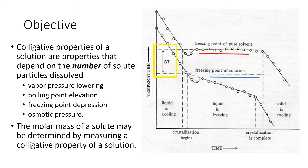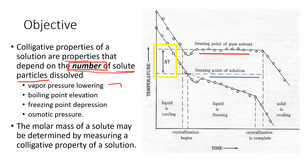In this lab we are applying our knowledge of colligative properties. Colligative properties of a solution are those properties that depend on the number of solute particles. They do not depend on the identity of the particles — they depend on how many you have. The four properties affected by how many particles you have are vapor pressure lowering, boiling point elevation, freezing point depression, and osmotic pressure.